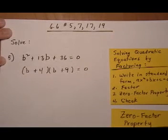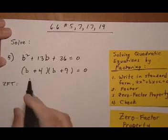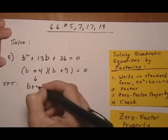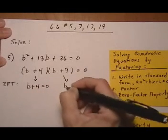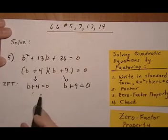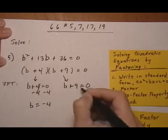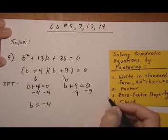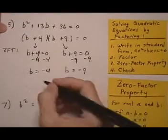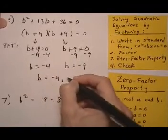Now we're going to apply the zero factor theorem. If the product of two factors equals zero, either the first one equals zero or the second one equals zero. So we set both equal to zero and solve for the b values. If we take away 4, we get b equals minus 4. Take away 9 from both sides, we get b equals minus 9. So the solution is b equals minus 4 or b equals minus 9.